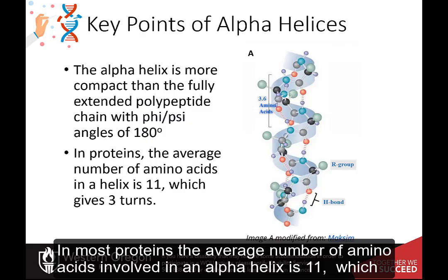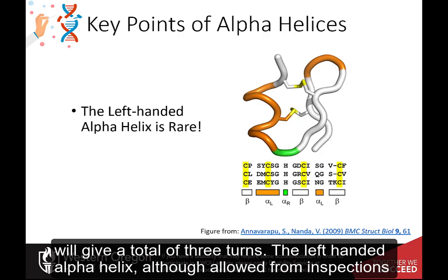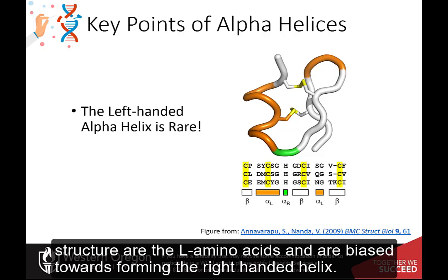In most proteins, the average number of amino acids involved in an alpha helix is 11, which will give a total of three turns. The left-handed alpha helix, although allowed from inspections of the Ramachandran plot, is rarely observed, since the amino acids used to build protein structure are the L amino acids and are biased towards forming the right-handed helix.